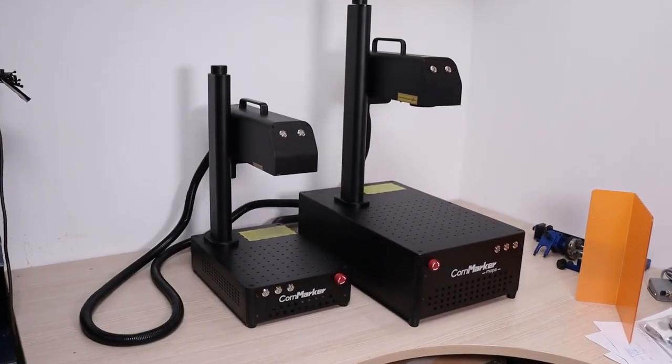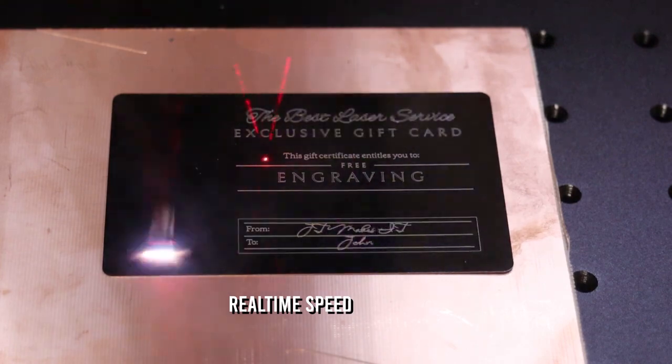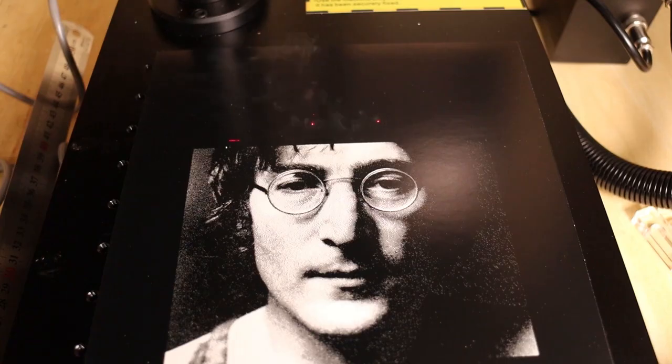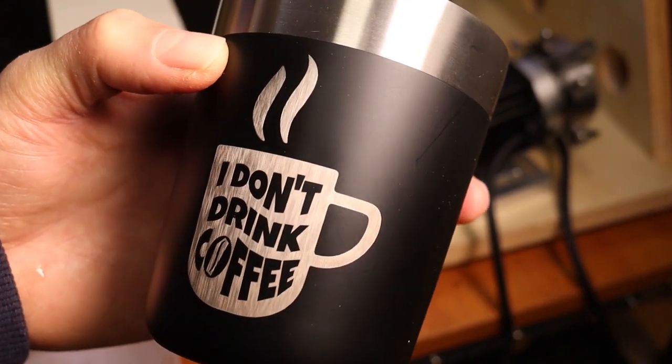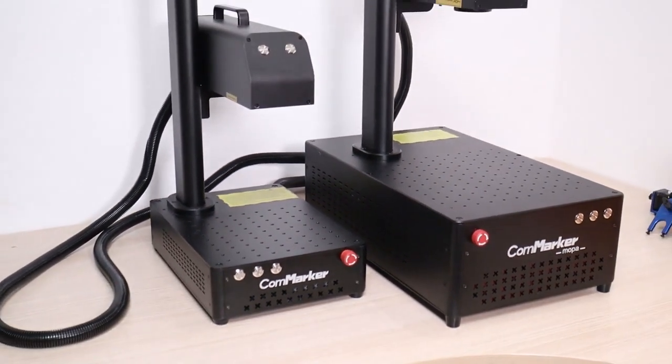A while ago, I have reviewed the standard 20-watt Q-switch type of Commarker B4 fiber laser, which has proven itself to be an amazing laser engraver for the money. But in this video, I will review its bigger brother, the 60-watt JPT Mopa.